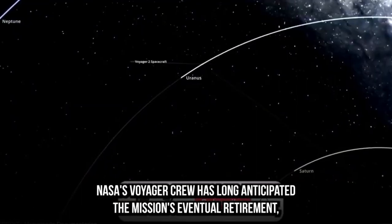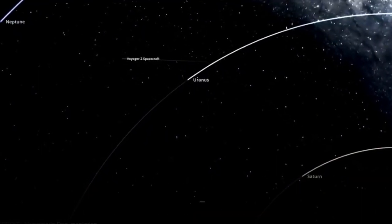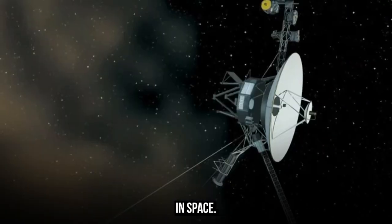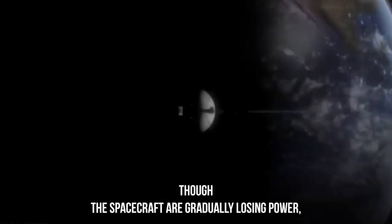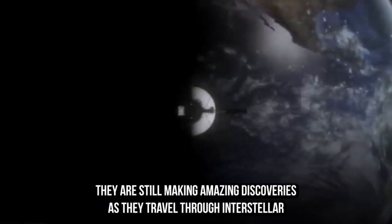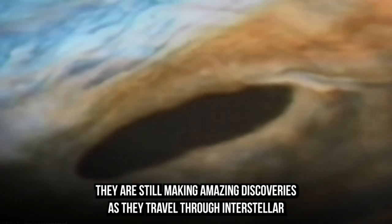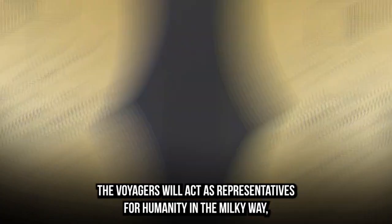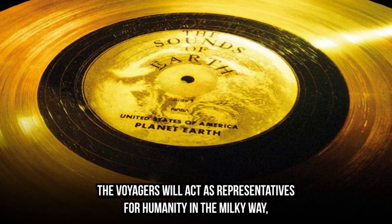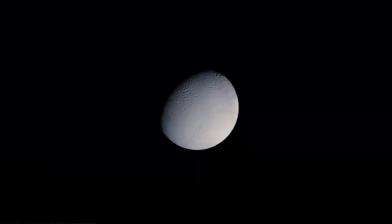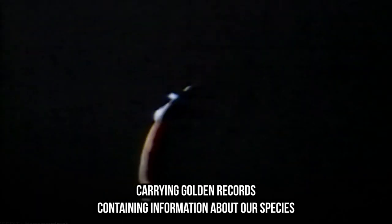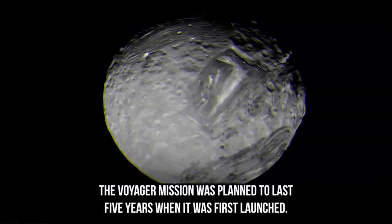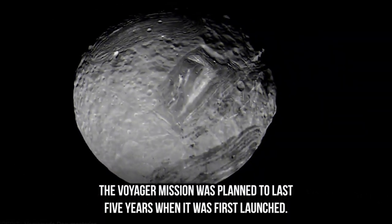NASA's Voyager crew has long anticipated the mission's eventual retirement, which might occur in the coming years as the probes approach their fifth decade in space. Though the spacecraft are gradually losing power, they are still making amazing discoveries. Even when they go into permanent radio silence, the Voyagers will act as representatives for humanity in the Milky Way, carrying golden records containing information about our species and greetings from Earth. According to NASA officials, the Voyager mission was planned to last five years when it was first launched.